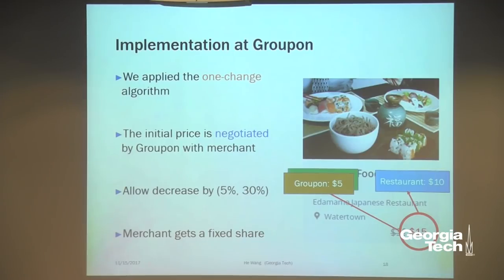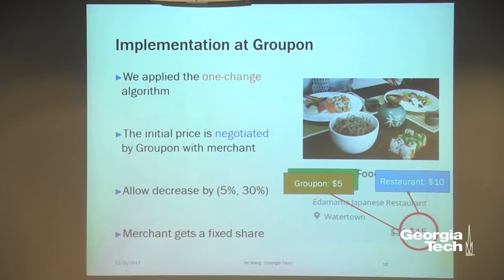In response to a question about capacity constraints at restaurants: in this case we do not consider such constraints because these are deals — not physical products — so there's no hard inventory constraint. In practice there is a soft cap on deals that can be sold, but if the cap is reached, Groupon and the restaurant can renegotiate and sometimes increase the cap. However, for physical products we do have to consider inventory constraints, which I'll show in the next example.